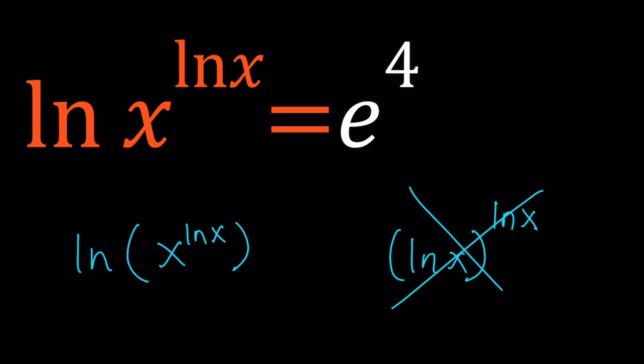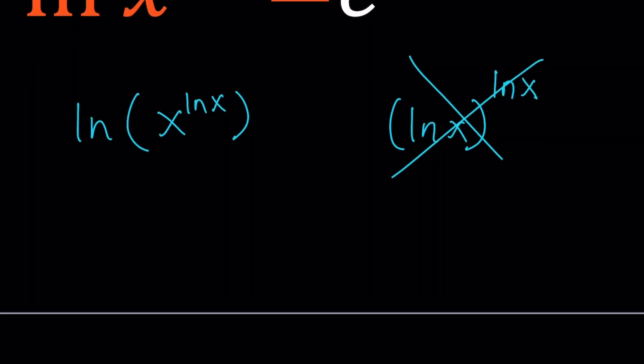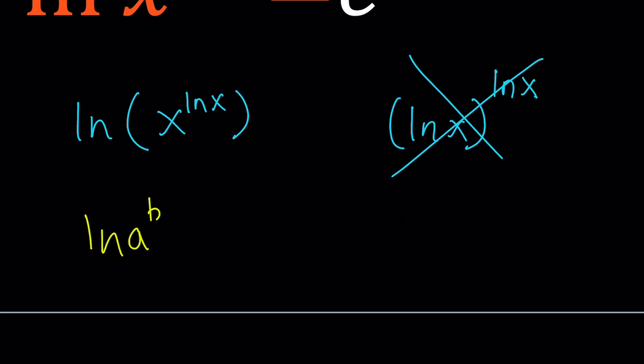So that means we can use the power rule. What is the power rule for logarithms? Well, if you have ln a to the b, then you can move this b to the front and that becomes b times ln a.